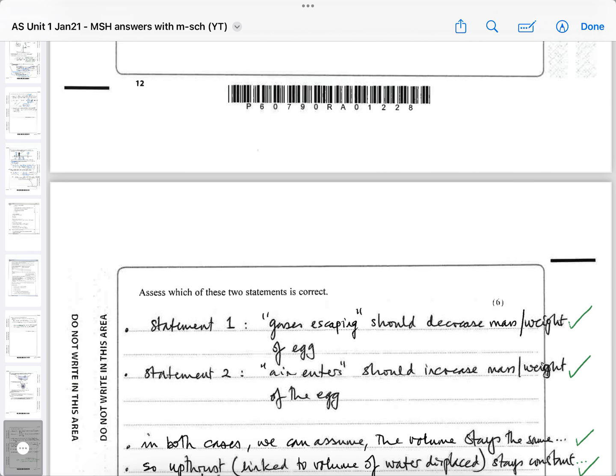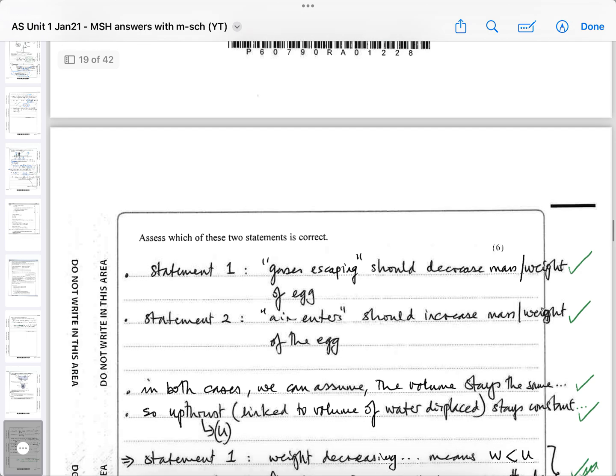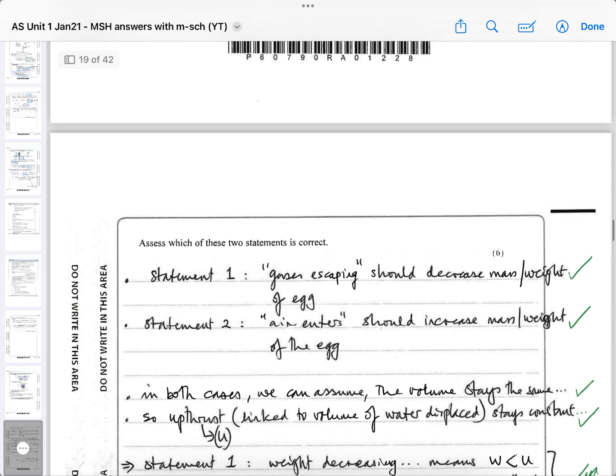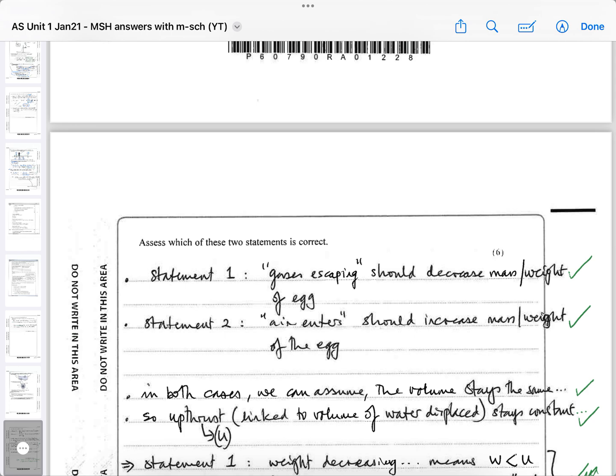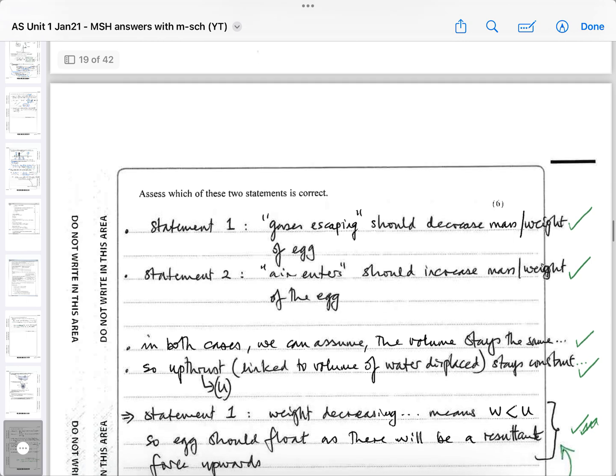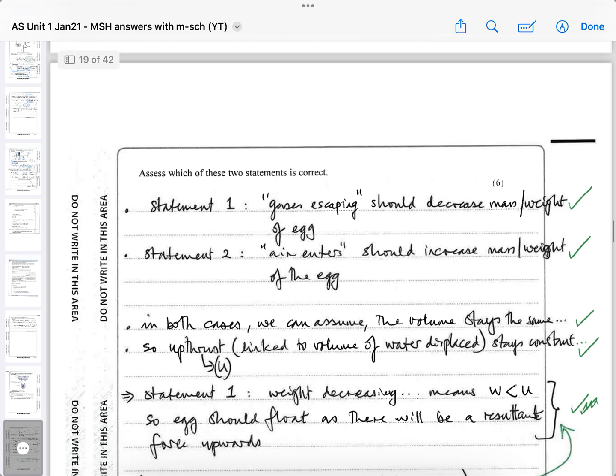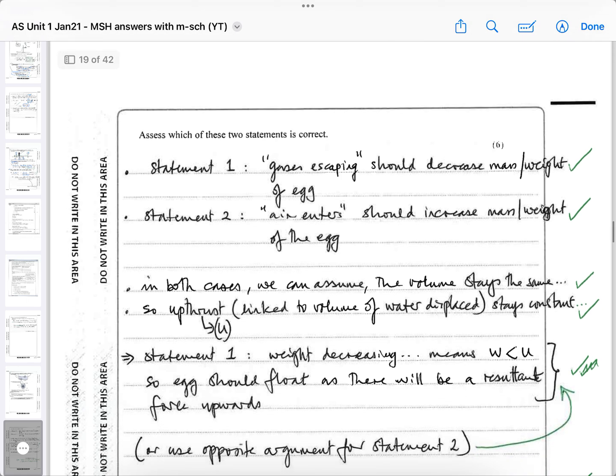So upthrust, which is linked to the volume of water displaced, will stay constant. So it's four marks already. Statement one: weight is decreasing means that weight will be less than the upthrust because the upthrust hasn't changed. If the volume hasn't changed, so the egg should float as there will be a resultant force upwards because the upthrust is bigger than the weight. Because in statement one, gases are escaping, so it should start to float. It should start to move up to the surface of the water.